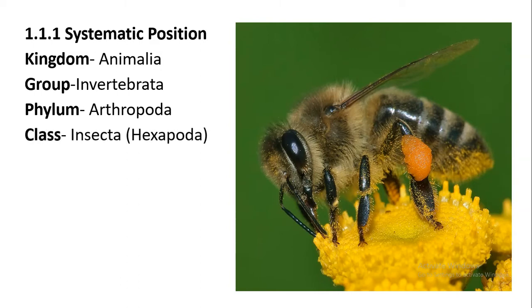Coming to the class, that is Insecta. In Insecta, there are a total of six legs present, so we call them Hexapoda. Hexa means six and poda means legs, so they are six-legged invertebrates.